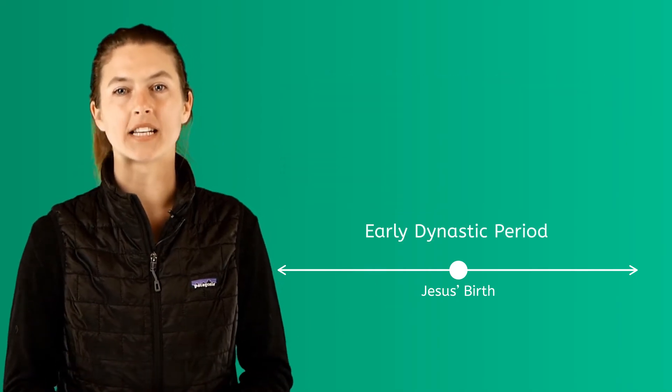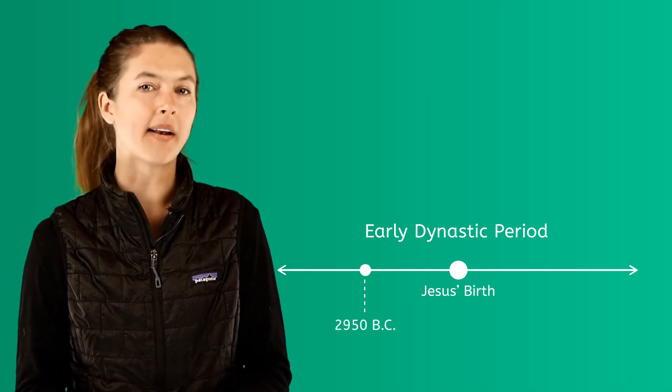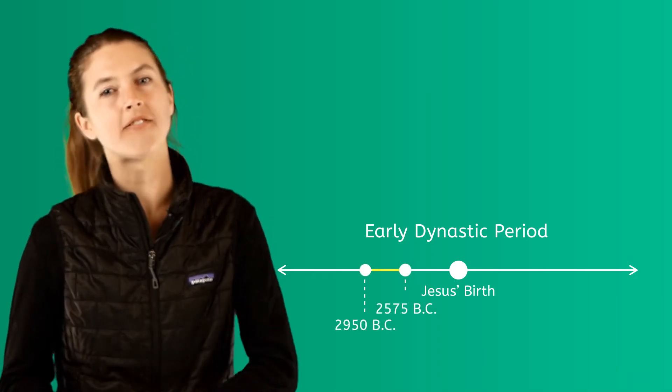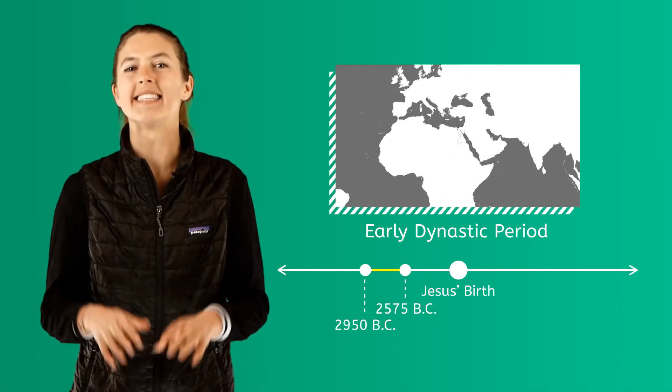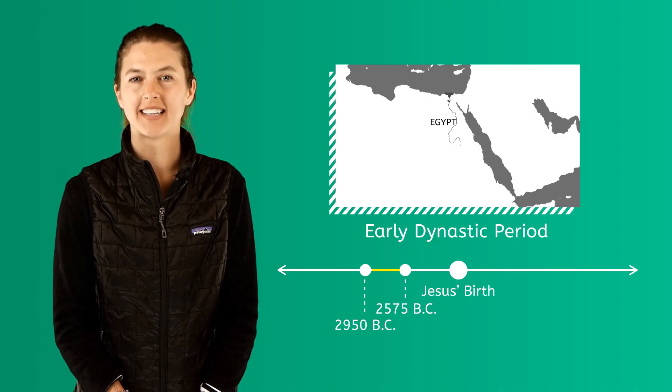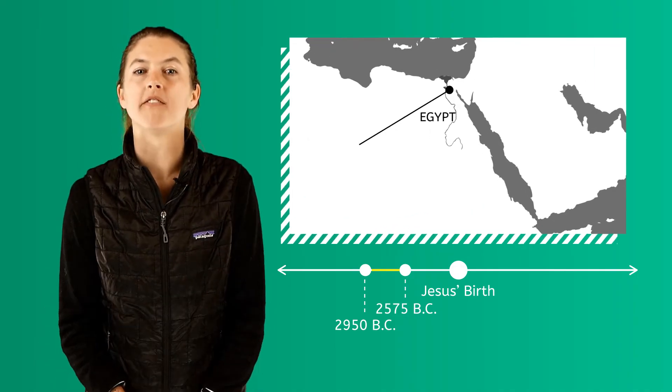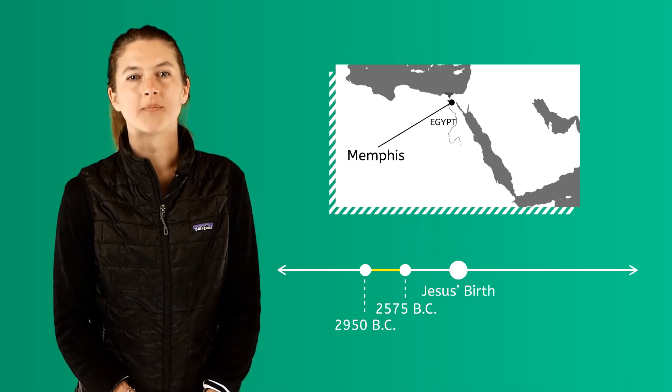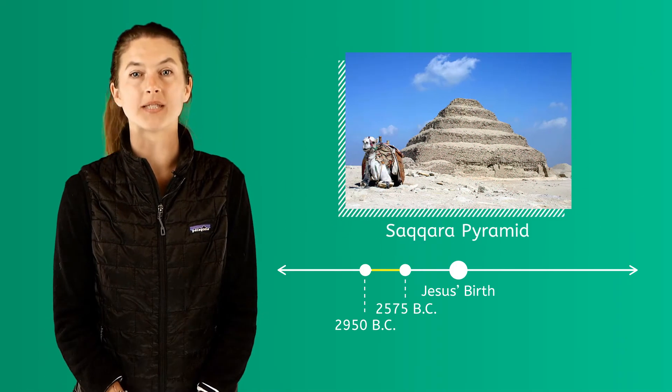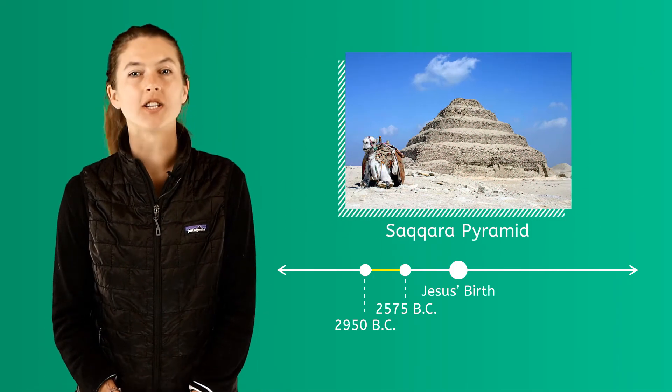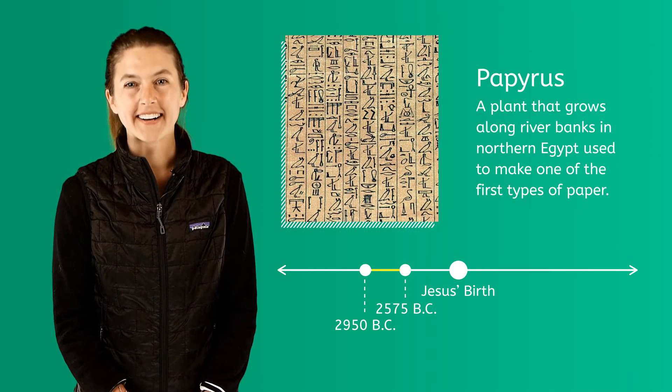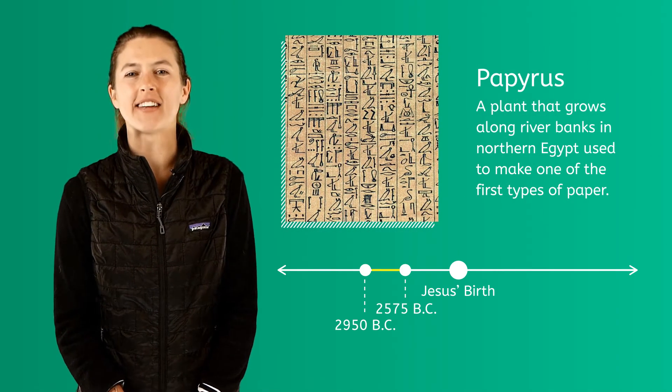The Early Dynastic Period, which lasted from 2950 BC to 2575 BC, is the second major period in Egyptian history. The Egyptian capital of Memphis was founded, the first pyramid at Saqqara was built, and Egyptologists believe that the first writing on papyrus, a kind of paper, was invented.